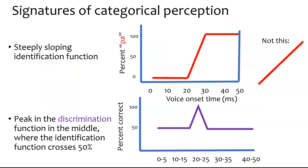So our signatures of categorical perception are as follows: a steeply sloping identification function rather than a diagonal line, and a peak in the discrimination function that occurs exactly at the crossover point of that identification slope.